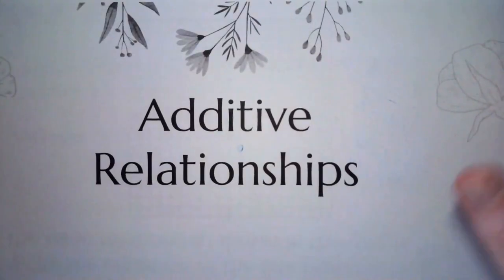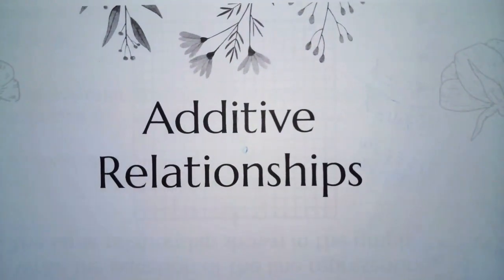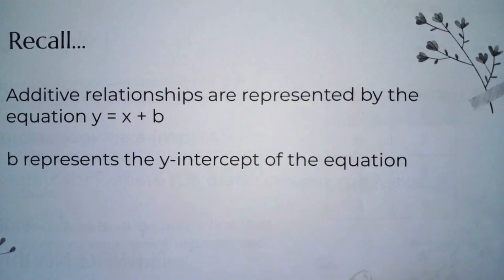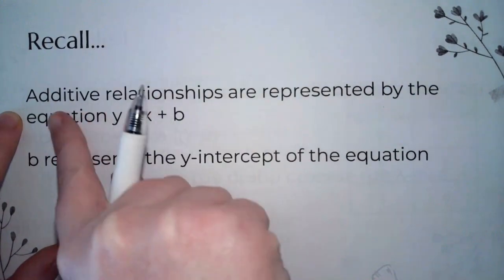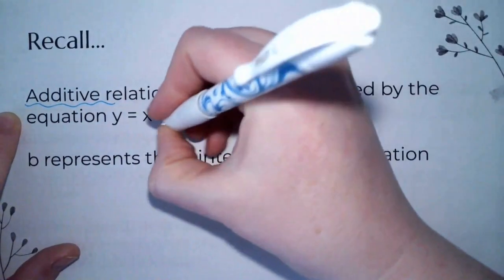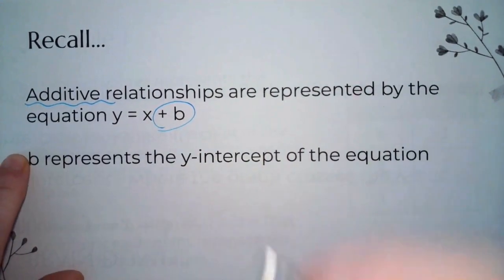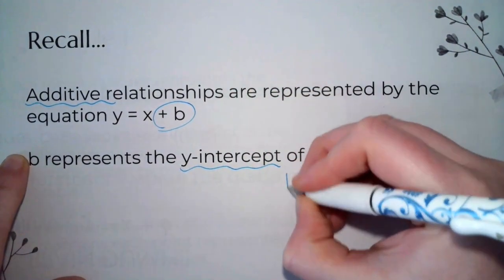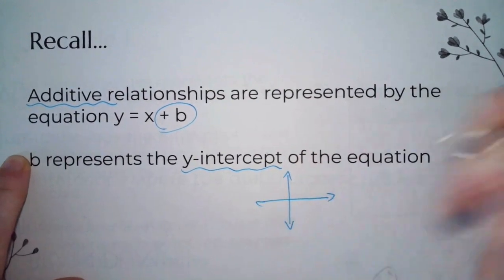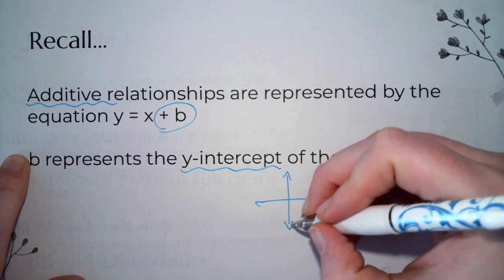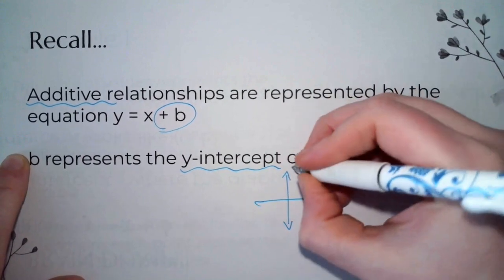That's all the multiplicative stuff. The next thing we're going to do is additive. Multiplicative is multiplying, so additive is adding. It's represented by y equals x plus b, where b represents where the line crosses the y-axis. So if a line passes through the point 4 on the y-axis, b is going to equal 4.